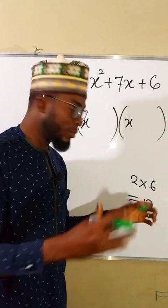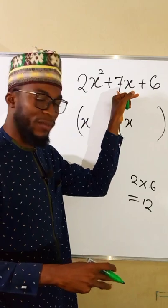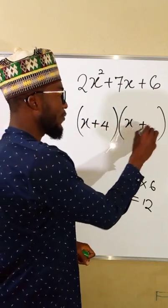Think of two numbers which when you multiply them together you get 12, and when added together, you get the coefficient of the middle term, which is 7. The numbers are positive 4 and positive 3.